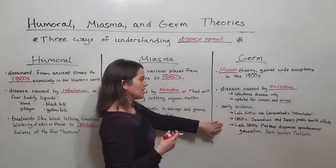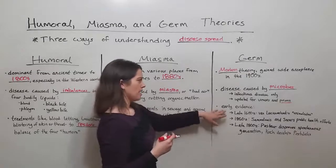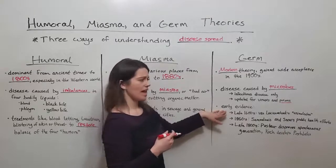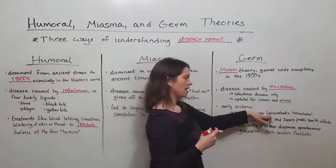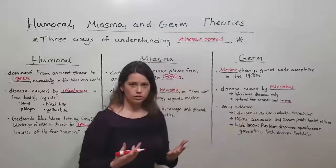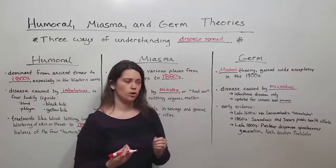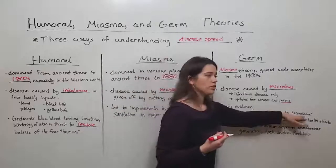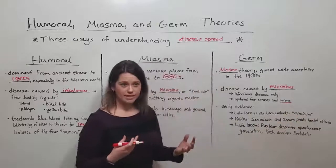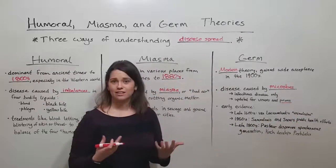And now let's talk about some of the early evidence for germ theory. As early as the late 1600s, we had a scientist, Anton van Leeuwenhoek, who developed an early microscope and he was the first person to actually see bacteria under a microscope. He called them animalculae or animalcules, which is basically the Latin for tiny animals.